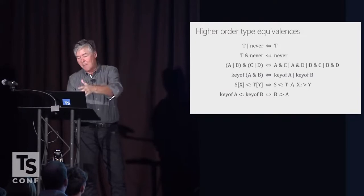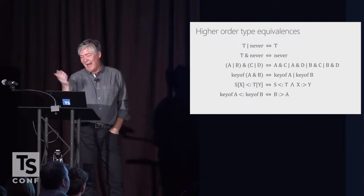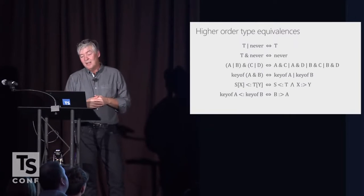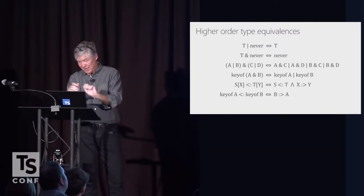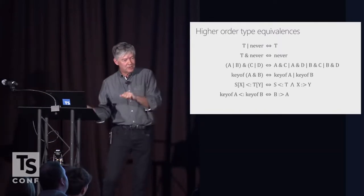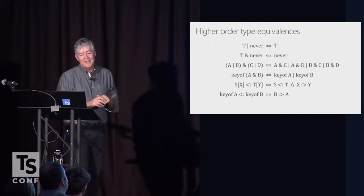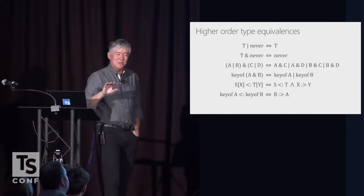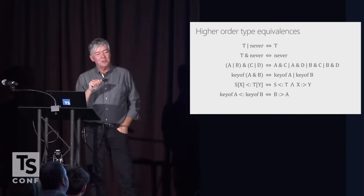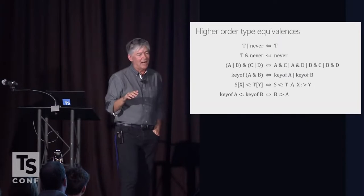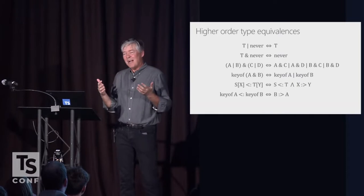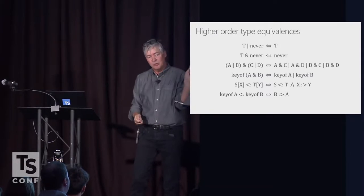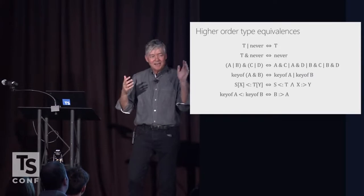And T sub K evaporates and becomes whatever the type of that property is in that object. But increasingly, our work in designing the type system is actually about reasoning about these higher order type equivalences of all of these type constructors that we have introduced. And this sort of gets a little crazy now, but here are some examples of, there are many of them. But for example, a union of T and the never type, which is the empty union, is just T. And an intersection of T and never is never.